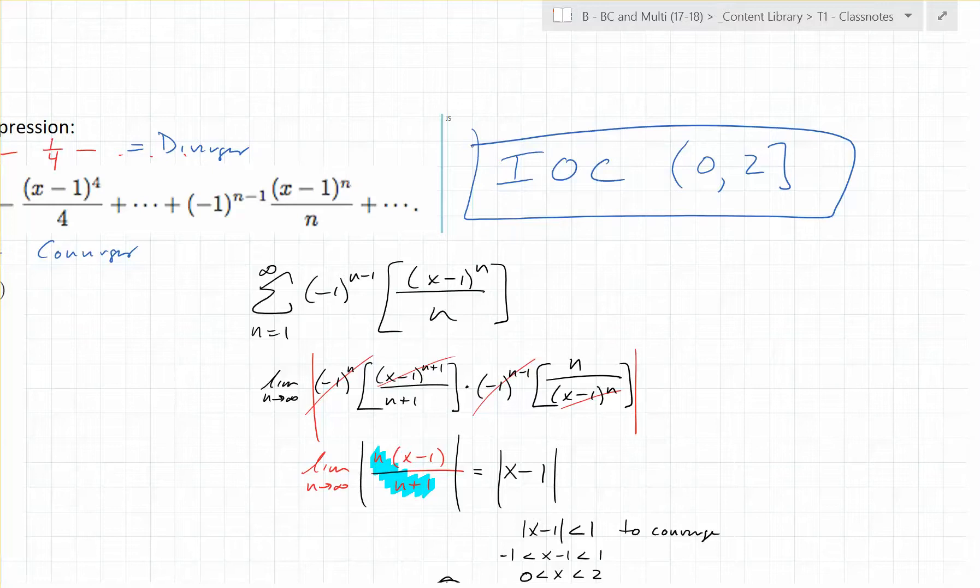What's the radius of convergence? It's 1. It's the radius of the interval. Key thing: you run the ratio test, but what do you have to test at the end after you run the ratio test? You have to test the endpoints.